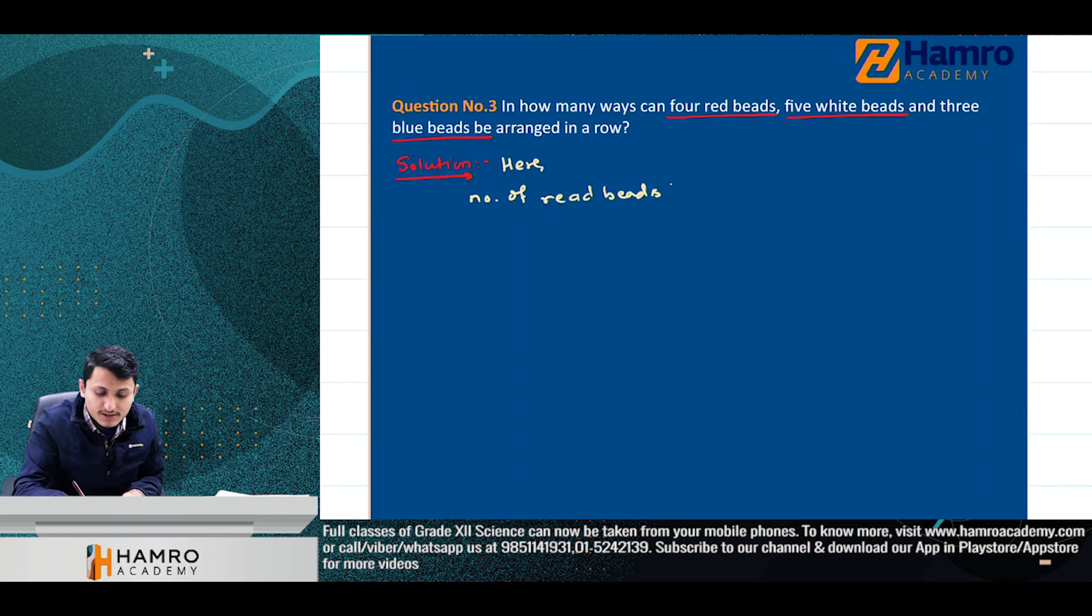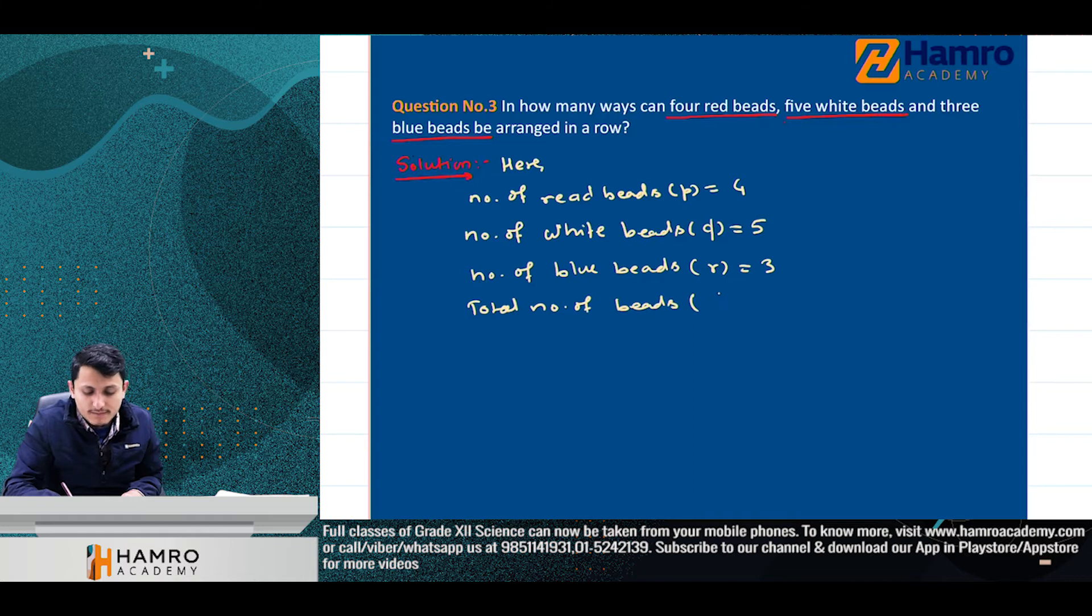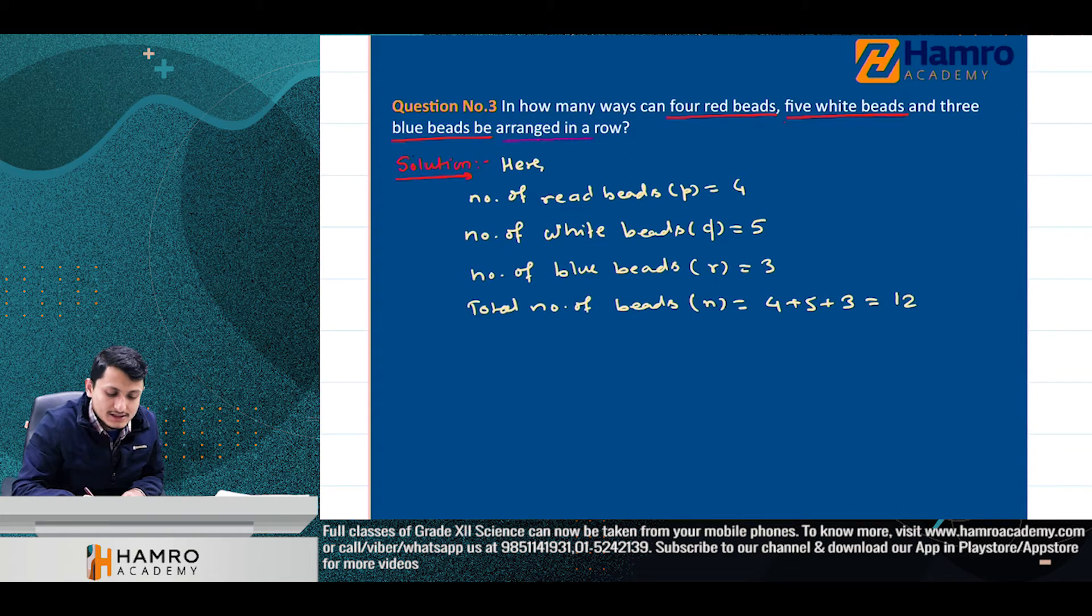Let's go to the solution. Here, the given information is: number of red beers is four, number of white beers is five, and number of blue beers is three. Total number of beers equals four plus five plus three equals twelve. Total number of beers is twelve.